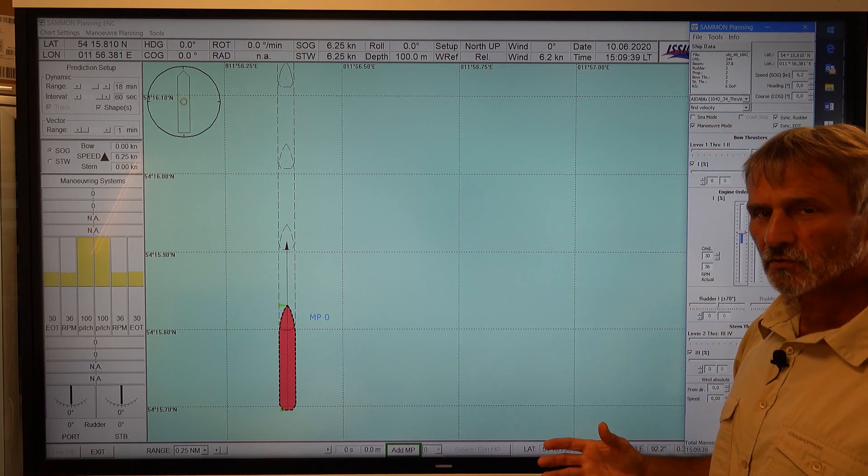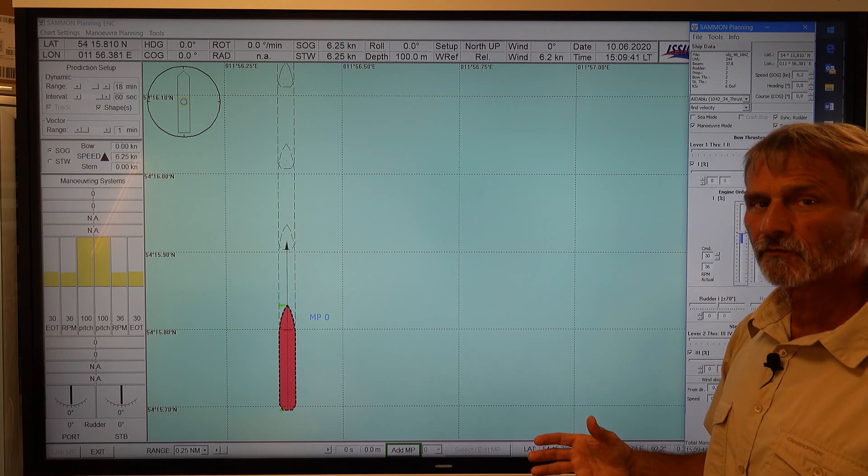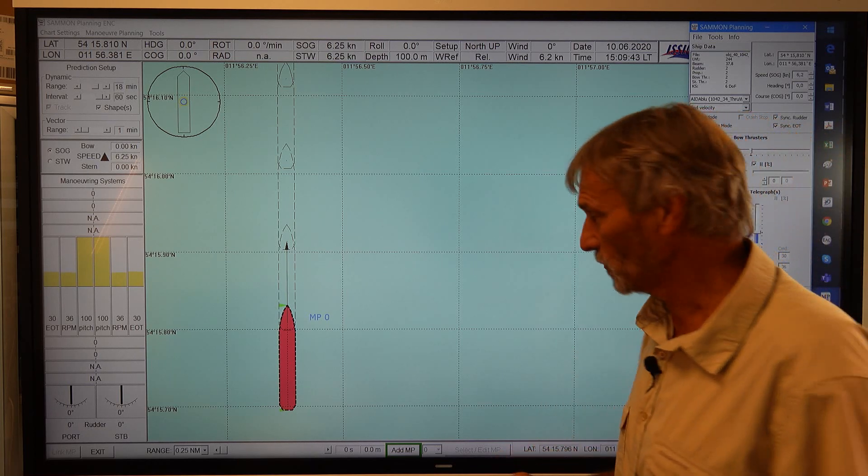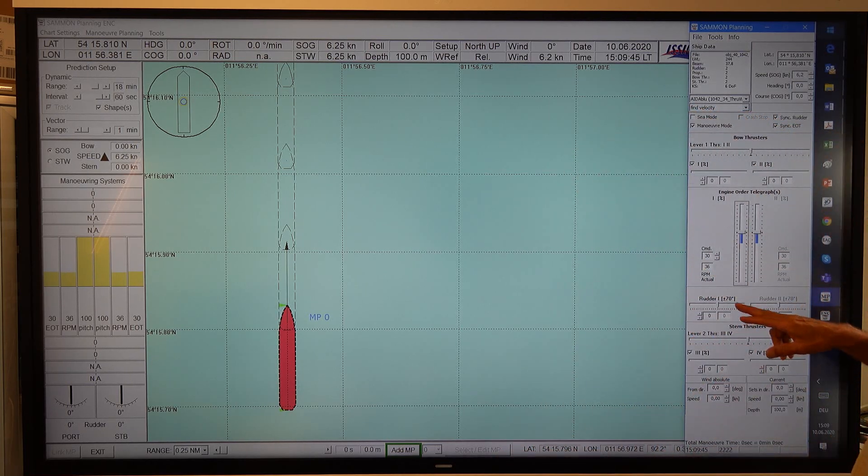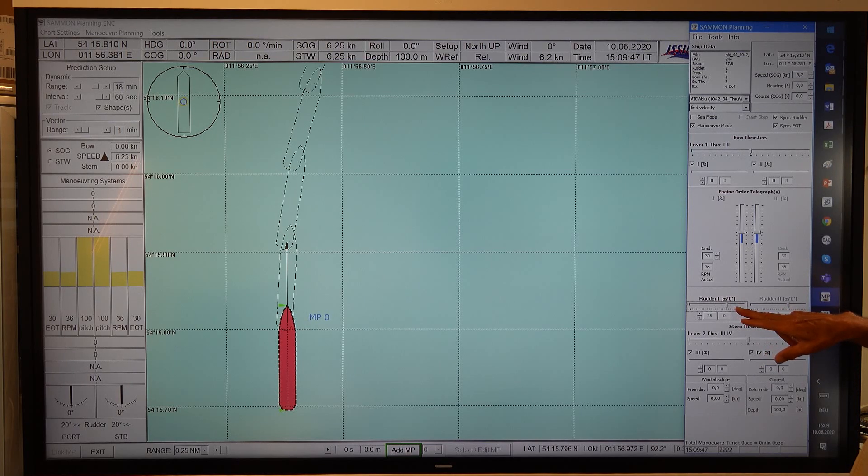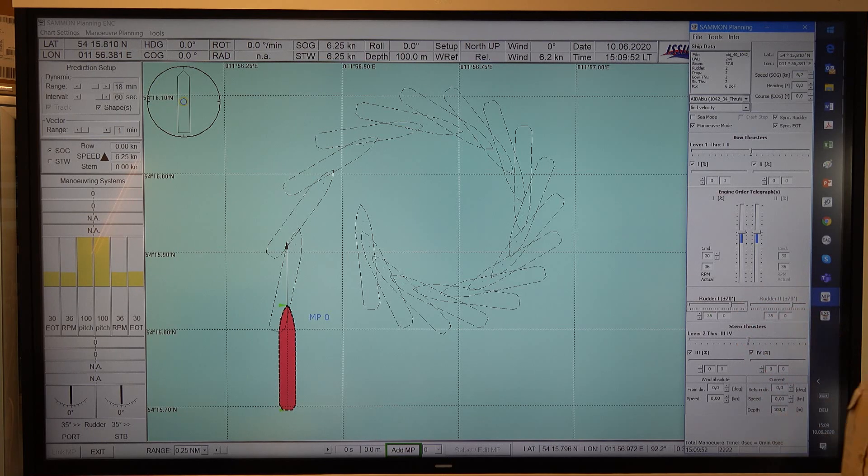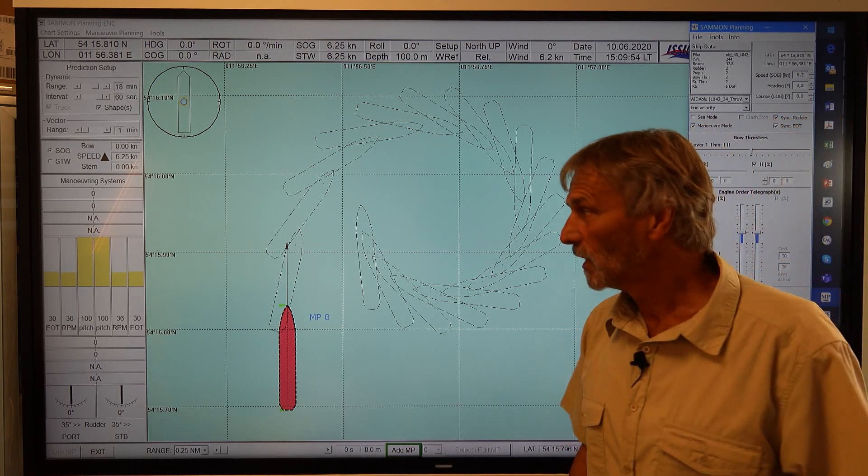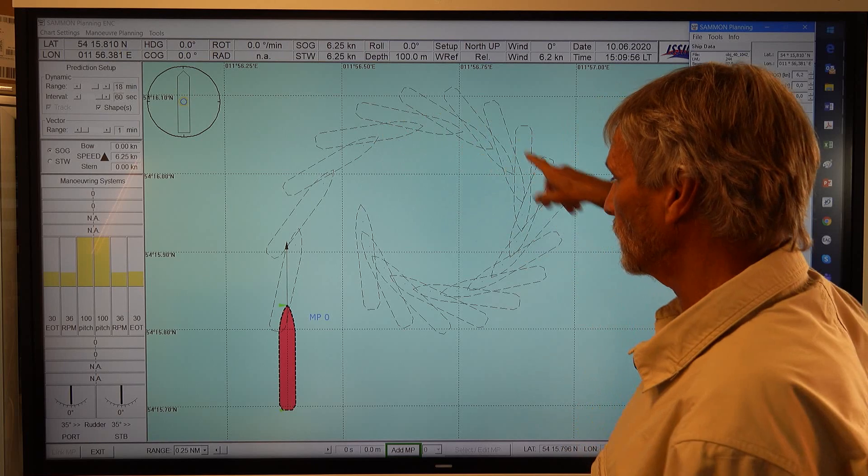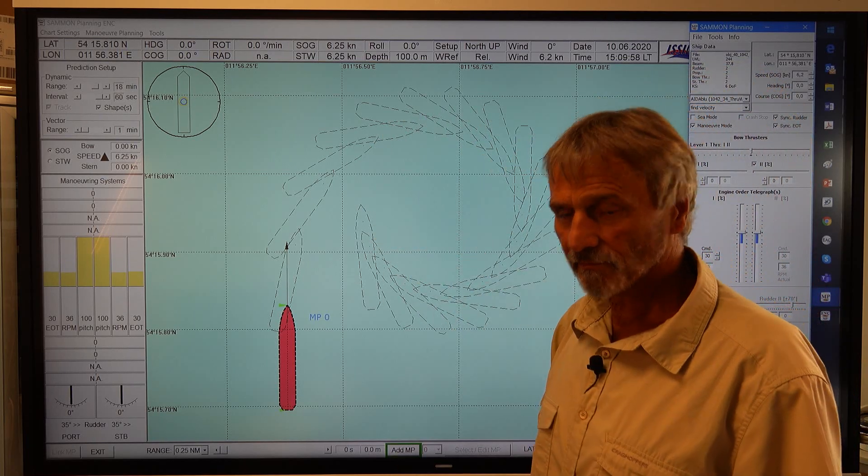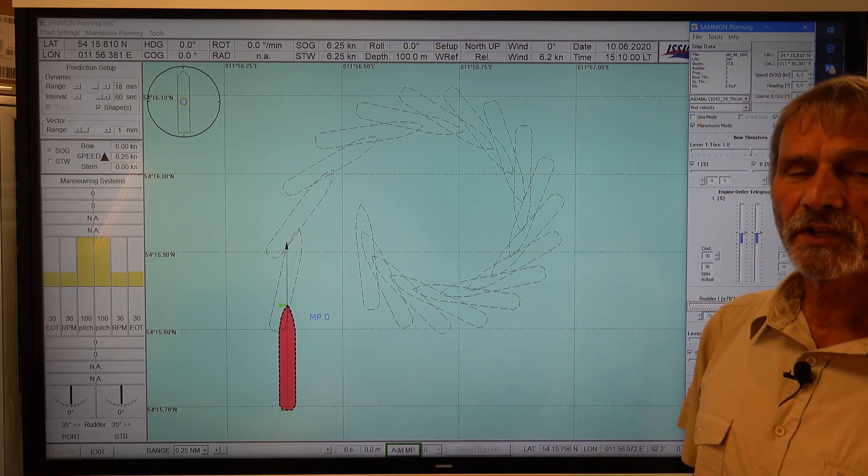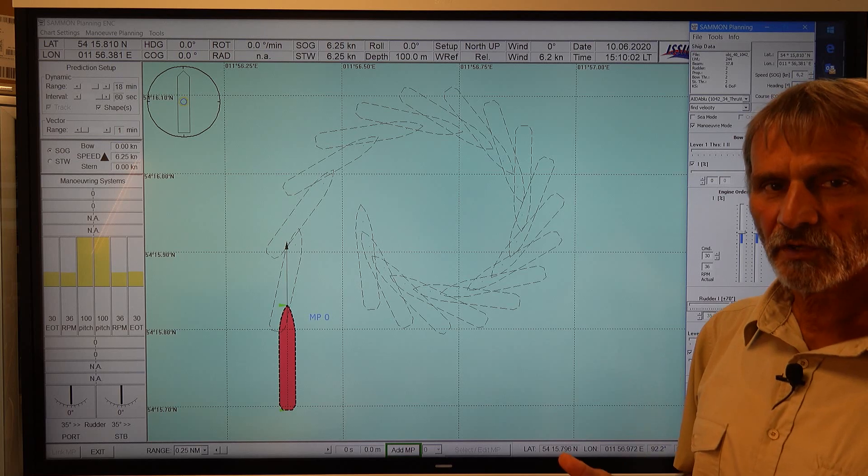So now we want to discuss the pivot point for a turning circle maneuver. We put the rudders because that's a twin screw twin rudder ship, we put the rudder to 35 degrees and this is the result of the turning circle. I will now indicate where the pivot point location is.